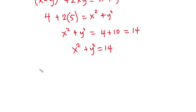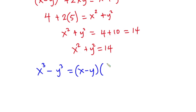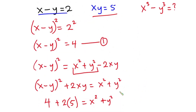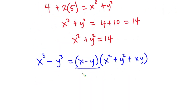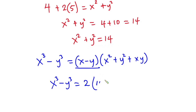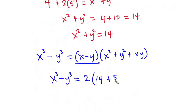From the problem, we have to find the value of x to the 3rd power minus y to the 3rd power. This is the same as x minus y, into x squared plus y squared plus xy. We know x minus y is 2, x squared plus y squared is 14, and xy is 5. So we do direct substitution: x cubed minus y cubed equals 2 times the quantity 14 plus 5.